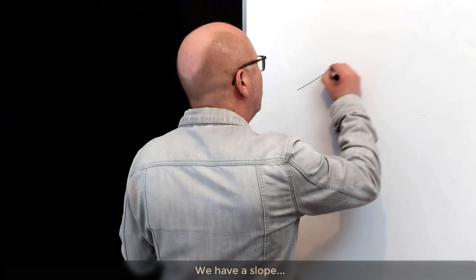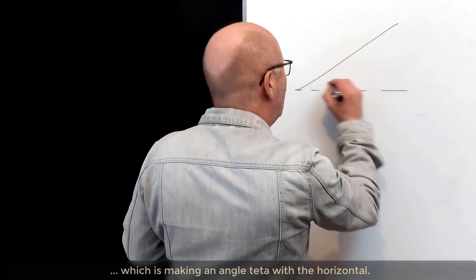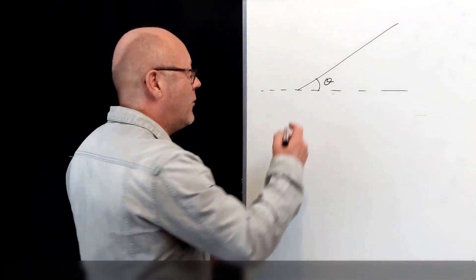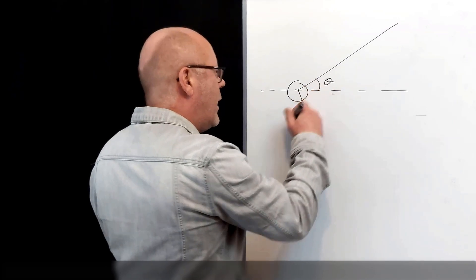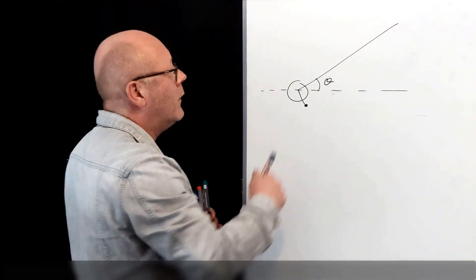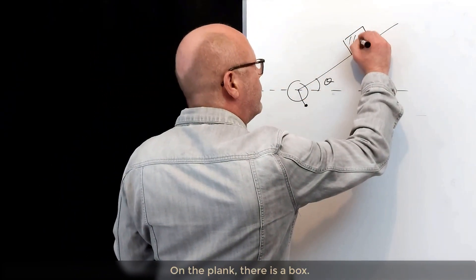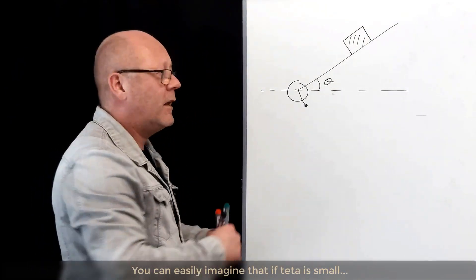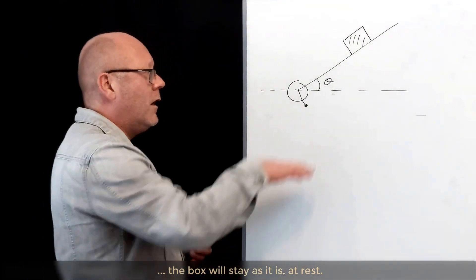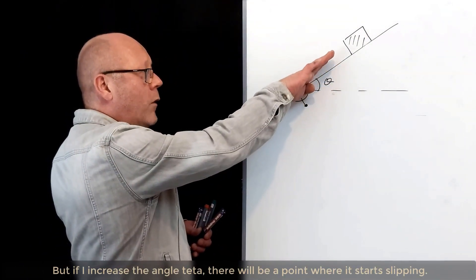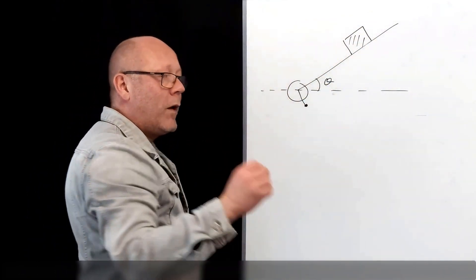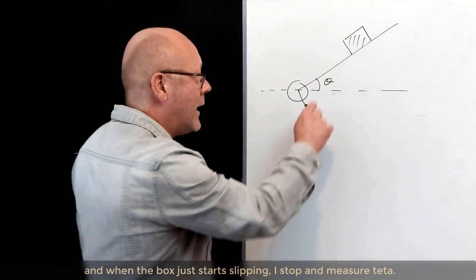We have a slope, which is making an angle θ with the horizontal. And actually, it's more like a plank, because here I could imagine a lever. And if I turn the lever, I can rotate the plank, so I would change the angle θ. On the plank, there is a box. You can easily imagine that if θ is small, the box will stay as it is, it will be at rest. But if I increase the angle θ, then there will be a point where it starts slipping. So I move my lever, and I increase θ. And when the box just starts slipping, I stop and I measure θ.